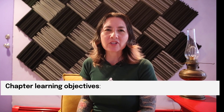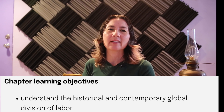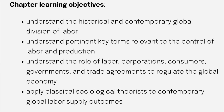This chapter applies what we've learned in the introduction and chapter one on understanding social class. We now turn to look at who does the labor in the world and how global regions specialize in certain types of work. The chapter learning objectives include understanding historical and contemporary divisions of labor globally, key terms related to the control of labor and production, the role of labor, corporations, consumers, governments, and trade agreements that regulate the global economy, and applying sociological theorists to contemporary issues in the global supply chain.